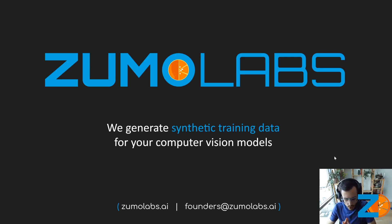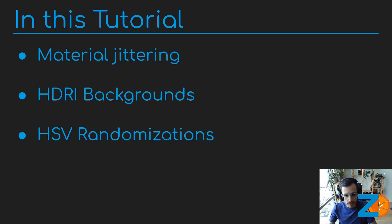Hello and welcome to part 3 of the ZPI tutorial series. My name is Hugo, one of the co-founders at Zuma Labs. This is a tutorial on how to generate synthetic training data for computer vision models. In this tutorial we're going to continue the project from the previous two tutorials and we're going to be adding material jittering, HDRI backgrounds, and HSV randomizations.